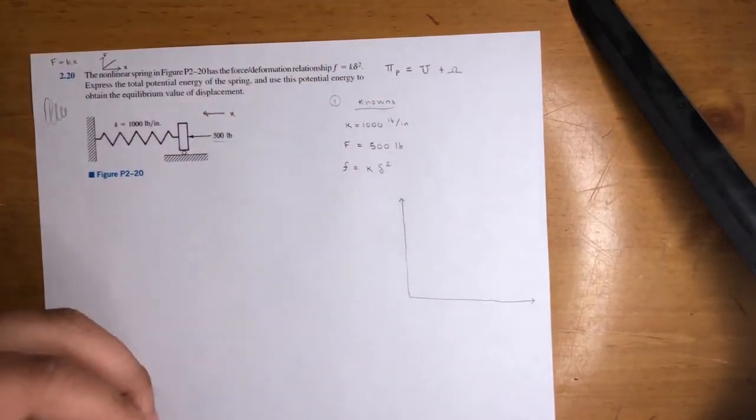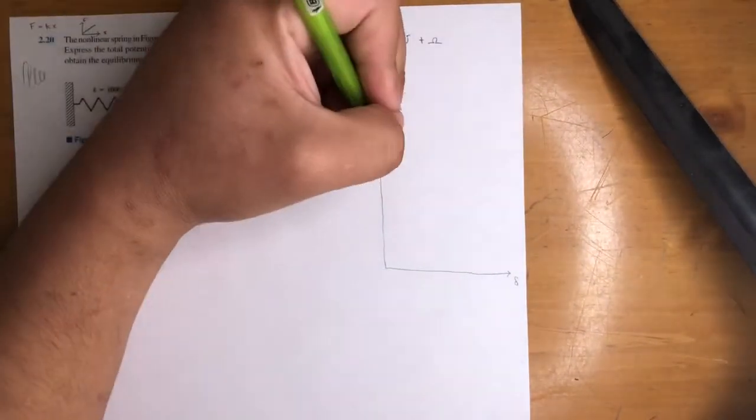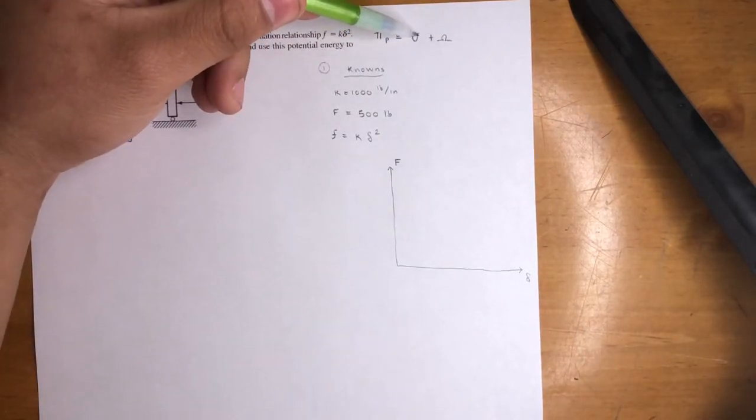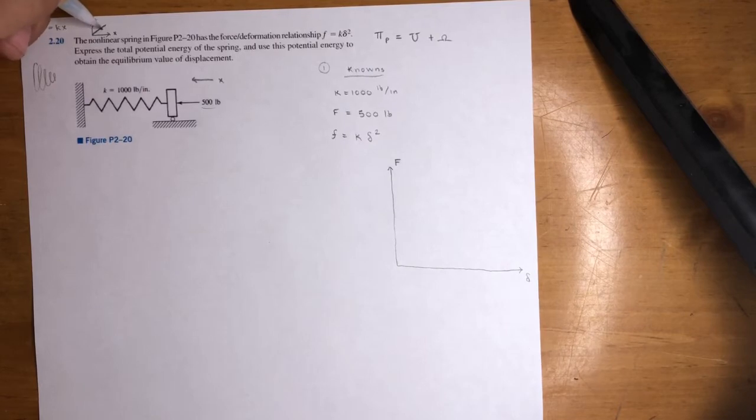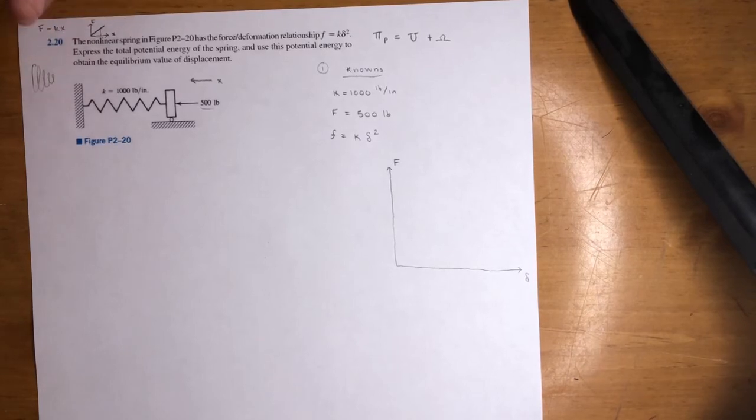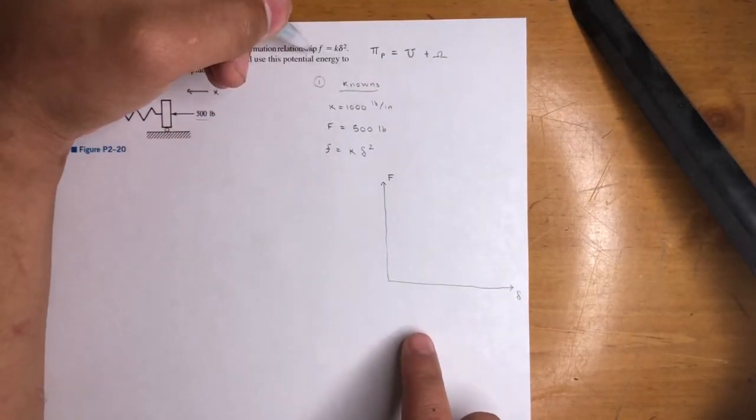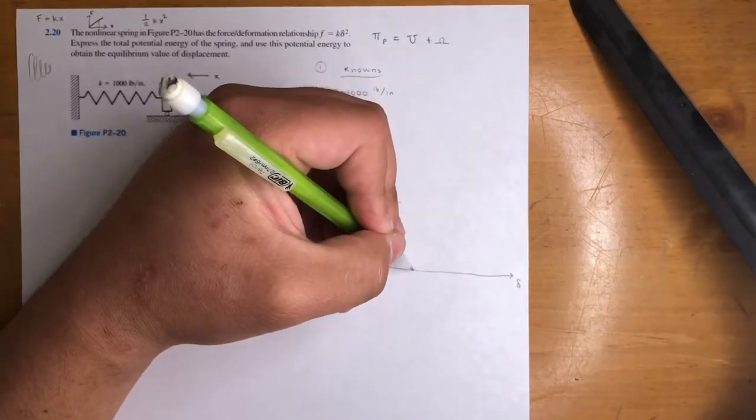Let me just go ahead and write one more thing, the relationship. So force is equal to k delta squared. That's the relationship of this helical spring. Now I told you, force to x for a linear spring, that's the relationship right there. In this case, when you graph it, I'll make it, I'm gonna try to make it as accurate as possible, not just BS it, because once we get our answer, you're gonna see how that makes sense. So we're gonna graph delta or x, it's the same thing, delta x and force.